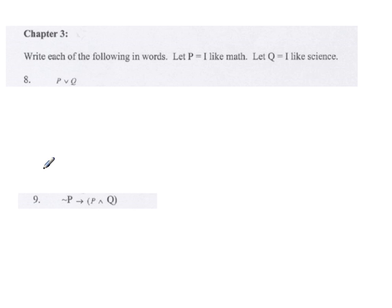Let's begin the Chapter 3 exam review material. Problem number 8. It says to write the following in words, where P is equal to 'I like math', Q is 'I like science', and we're trying to find P disjunction Q.